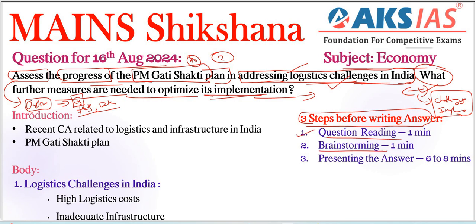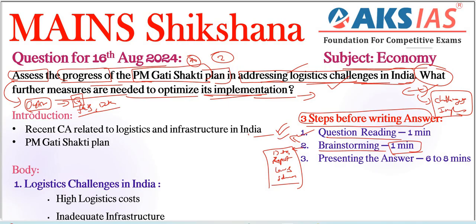Coming to brainstorming, we need to spend at least one minute to recall each and every aspect regarding PM Gati Shakti plan — when it was started, what are the important goals, objectives, and important aspects. Also, what are the important recent incidents or current affairs issues regarding that, what are the important data and reports, and what are the important schemes or laws related to it? From an economy point of view, we need to provide data and policies.